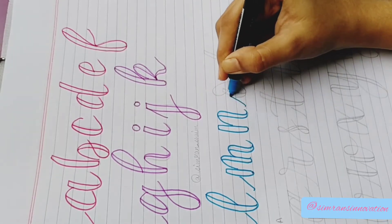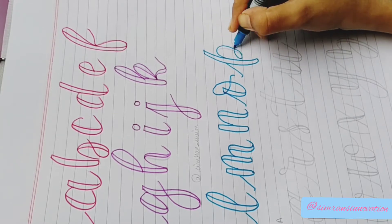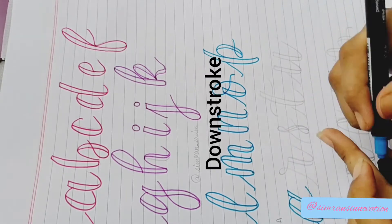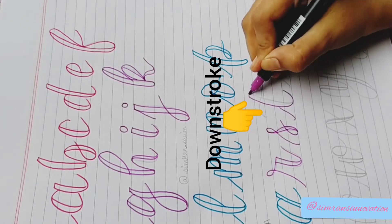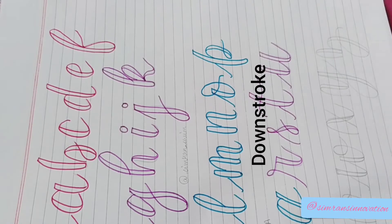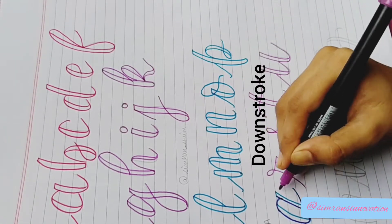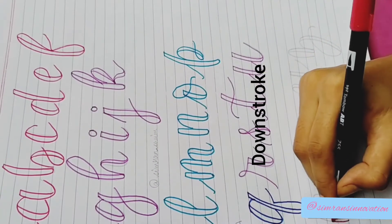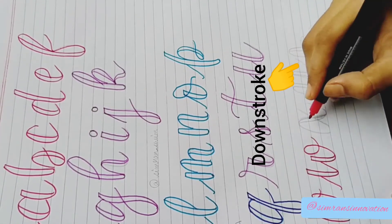Simple steps of fake calligraphy are: Number one, you write your word or letter in cursive or in your regular handwriting. Number two, add downstrokes. What are downstrokes? Let me tell you. Outline the portions where your pen was moving towards the bottom of the page. These thickened strokes are called the downstrokes.